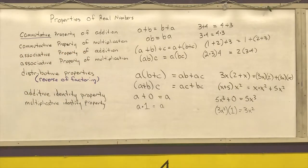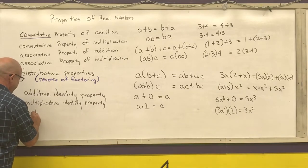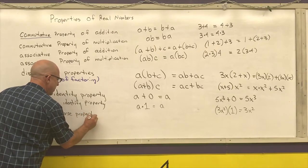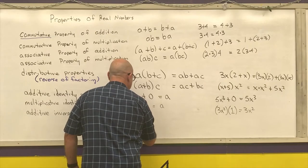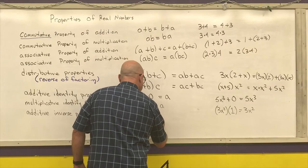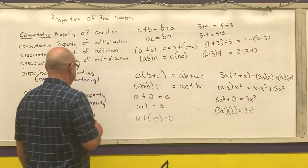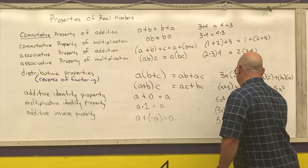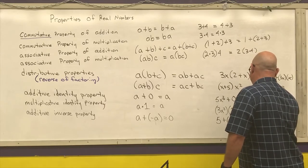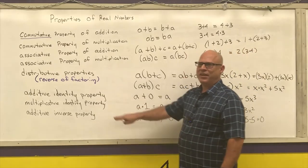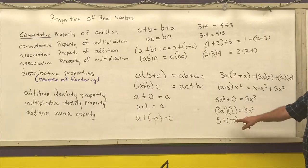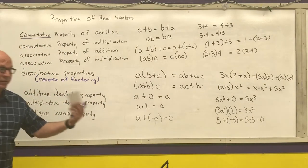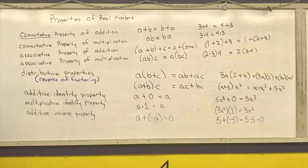Our last two properties are inverse properties. We have the additive inverse, which says any number plus its opposite is equal to 0. For example, 5 plus negative 5, which is the same as 5 minus 5, equals 0. It's from this additive inverse property that we get the definition of subtraction. Subtraction is just adding an opposite. When I cover the order of operations, I only cover addition, not subtraction, because subtraction is just adding an opposite of a number.